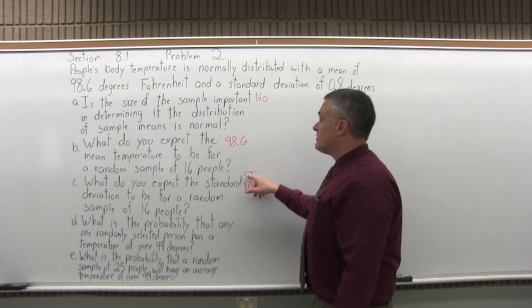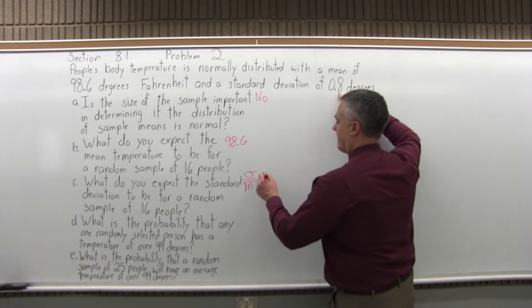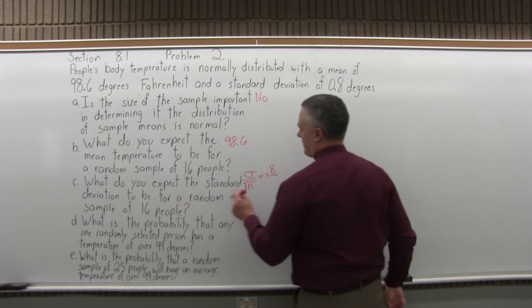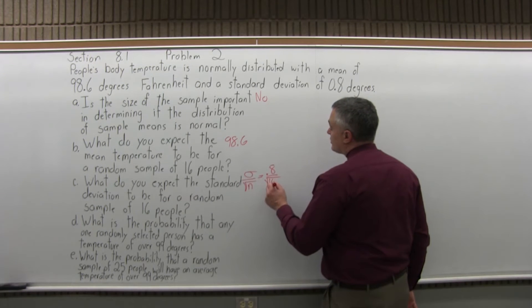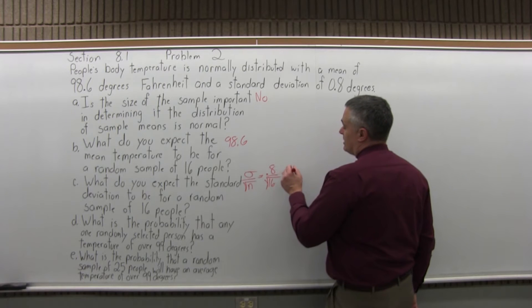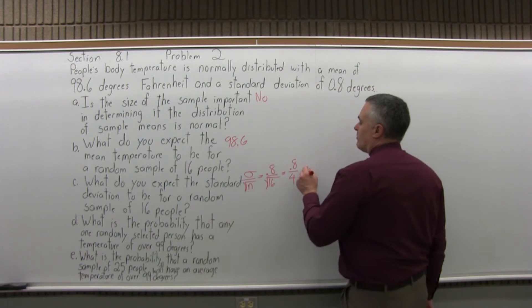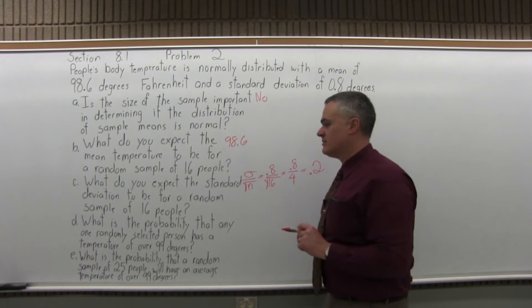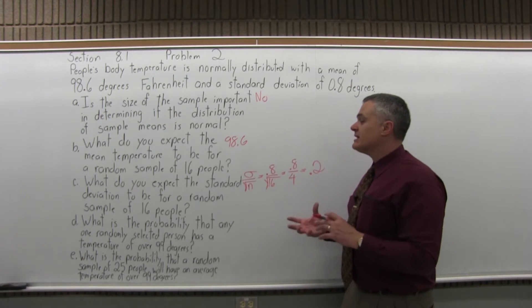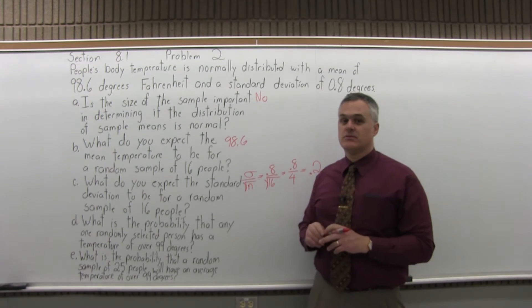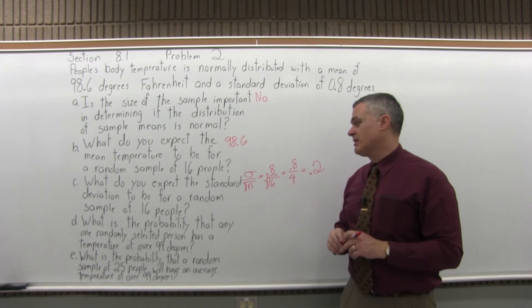The standard deviation for the population is given as 0.8, and the sample size is 16. So it's 0.8 over the square root of 16. The square root of 16 is 4, so 0.8 divided by 4 is 0.2. If you take a sample of 16 people, the standard deviation among that sample will be 0.2 — less than the standard deviation of the overall population.